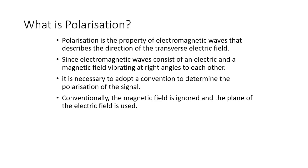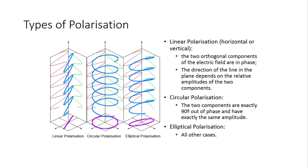Polarization is a property of electromagnetic waves that describes the direction of the transverse electric field. Since electromagnetic waves consist of an electric and a magnetic field vibrating at right angles to each other, it is necessary to adopt a convention to determine the polarization of a signal. Conventionally the magnetic field is ignored and the plane of the electric field is used. The types of polarization are linear polarization, circular polarization, and elliptical polarization.